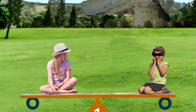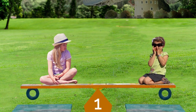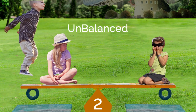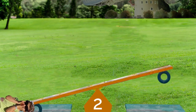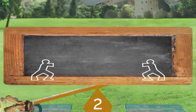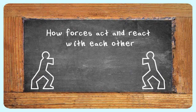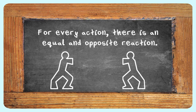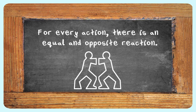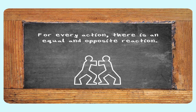His first law predicts how objects behave when forces are balanced. His second law tells us how objects behave when the forces aren't balanced. His third law explains how forces act and react with each other. Specifically, it states: for every action there is an equal and opposite reaction.